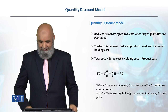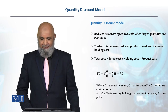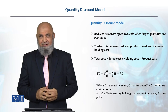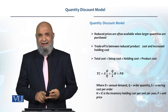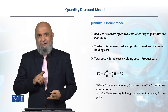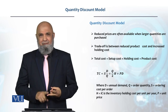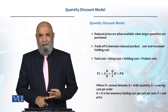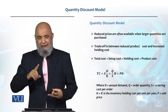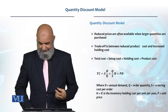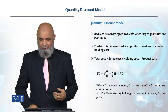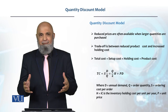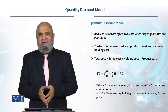This is the actual issue with quantity discounts. When you purchase in larger quantities, two things happen: one is the cost of the product — the per unit cost reduces. But on the other hand, the holding cost increases. So this is the comparison we make regarding the price of the product versus the quantity.